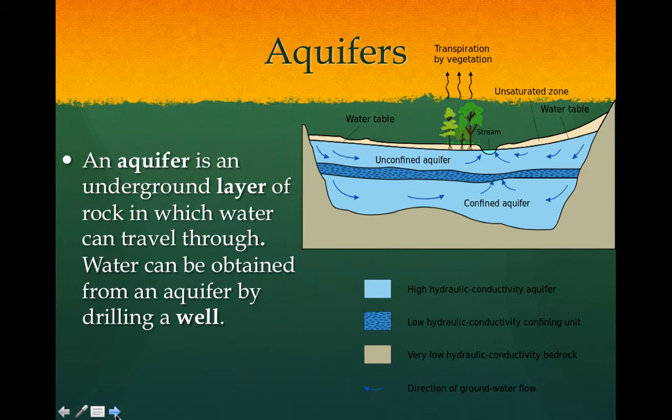An aquifer is an underground layer of rock in which water can travel through. Water can be obtained from an aquifer by drilling a well, so a lot of people will get their drinking water at their house from an aquifer. It's usually a porous layer of rock sandwiched between rock layers, like hard layers that water can't get through. It's usually under pressure and we can just tap a well into it and that water will come gushing out a lot of the time.